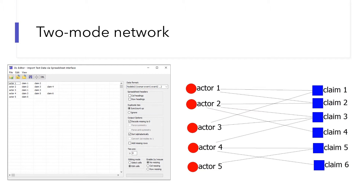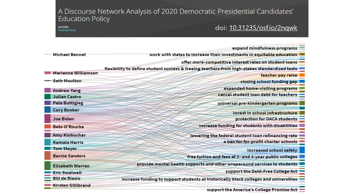With this two-mode network, you can use all the network analytical techniques we've learned over the past few weeks. Here is an example of how I built a two-mode network of the 2020 Democratic presidential candidates' education policy proposals. There were 29 Democratic candidates who announced their 2020 presidential campaigns. The candidates are on the left of the two-mode network, their policy proposals are on the right, and the ties represent who proposed what education policies.